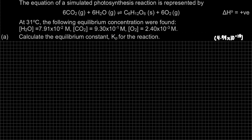The question asks part A: calculate the equilibrium constant for the reaction. K stands for equilibrium constant, and Kp stands for partial pressure. For Kp, we write products over reactants, but in this case only for the gas state.